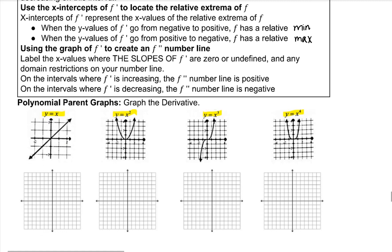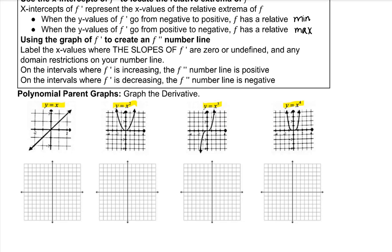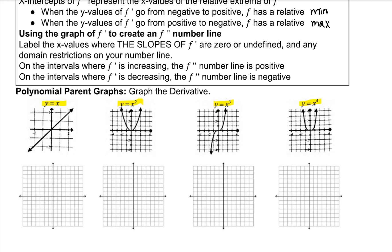To graph the derivative of y equals x: we're looking at the slopes at different points. The slope at negative 2 is 1. The slope at negative 1 — the slope everywhere is 1, right? This is a line. So no matter what the x value is, the slope is 1. y prime, the derivative of x with respect to x, is 1. So our derivative is a constant — a horizontal line at y equals 1.